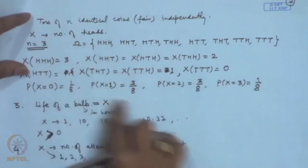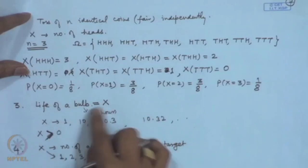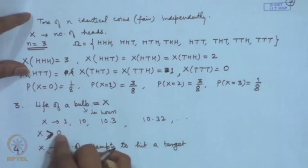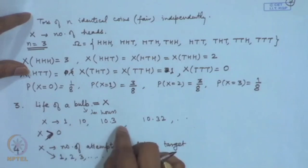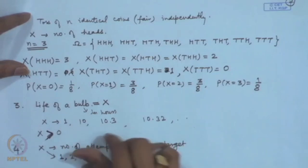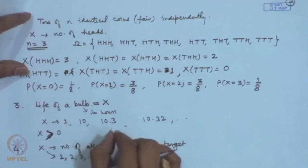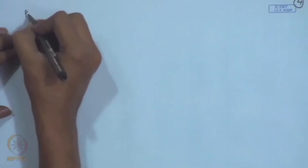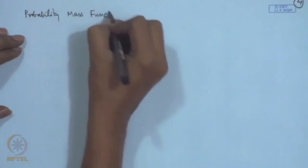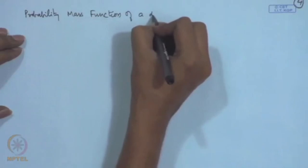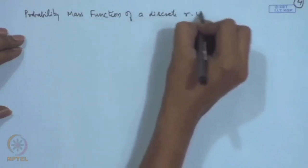On the other hand, for the random variable x denoting the life of a bulb, this is a continuous random variable because it takes values over an interval. Here we cannot allocate probabilities to each individual point; instead, we allocate certain density or probabilities for intervals, giving us a probability density function.